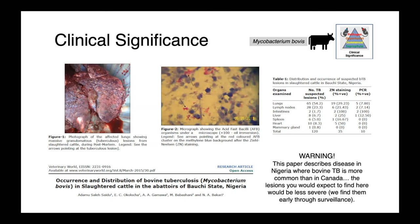If there's a suspect case, the first thing the CFIA would do is quarantine that farm and implement movement restrictions — no new cattle allowed on, and no potentially exposed animals allowed off. They would conduct a detailed investigation, getting information about the history of the farm and veterinary records. They would perform the tuberculin skin test, and potentially also the interferon gamma blood test. Any animals which were positive would be humanely euthanized and necropsies performed. If there were positive animals in the herd, the entire herd would be depopulated. Following depopulation, there are extensive requirements for cleaning and disinfection of the premises. Finally, there's compensation for the producer — the CFIA will pay the fair market value of the animals that had to be destroyed.